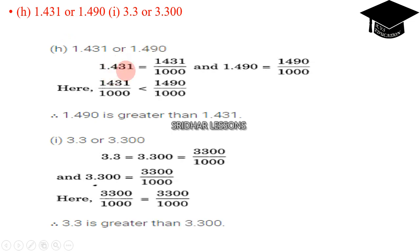Next, 1.431 or 1.490. 1.431 can be written as 1431 by 1000, and 1.490 can be written as 1490 by 1000. 1431 by 1000 is less than 1490 by 1000. Yes, true. Therefore 1.490 is greater than 1.431.